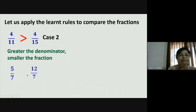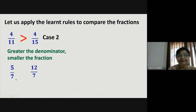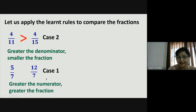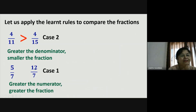Now compare five sevenths and twelve sevenths. This is case one because the denominator is the same. The rule: greater the numerator, greater the fraction. So five sevenths is less than twelve sevenths.